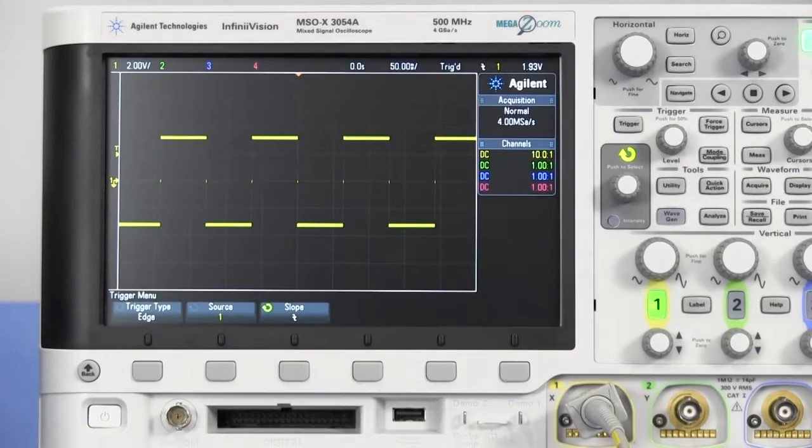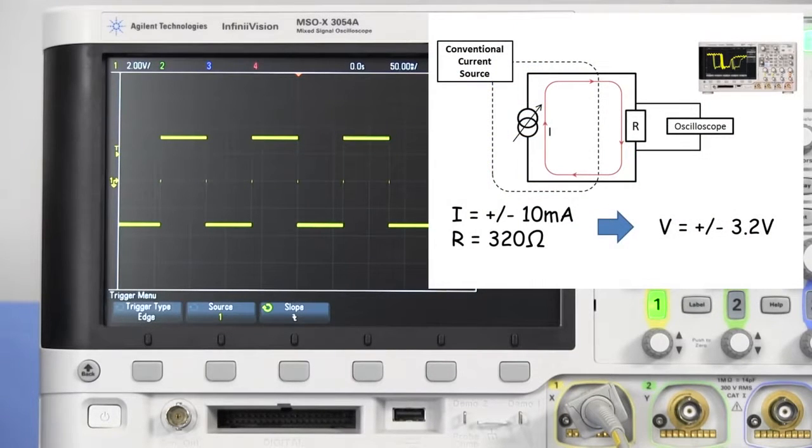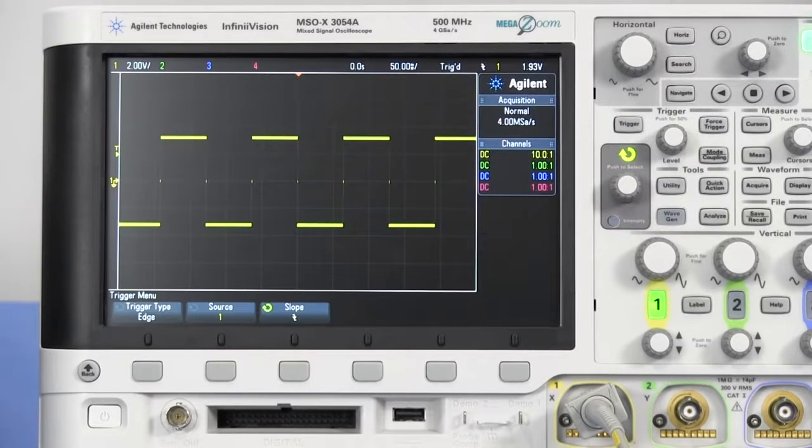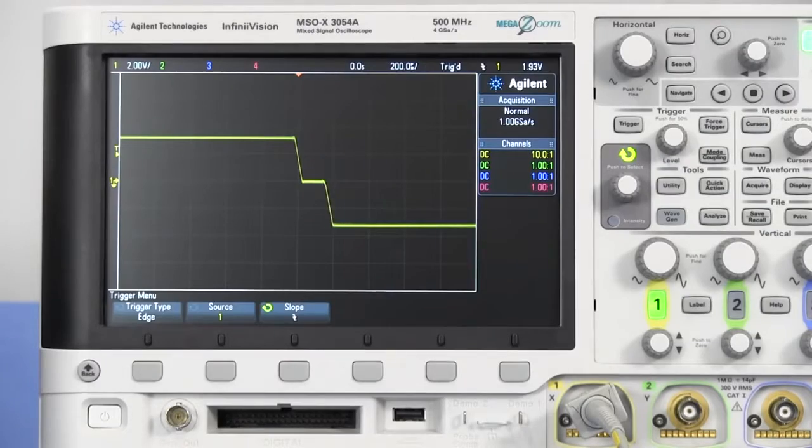This is a current square wave from a certain current source. The current source outputs plus minus 10mA, alternatively, with a period of about 200ms, and the oscilloscope captures the voltage drop across the resistor. By changing the time scale of the oscilloscope, you can see that the waveform flattens around the zero-crossing point.